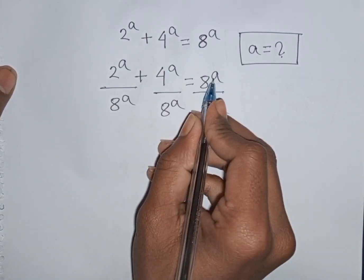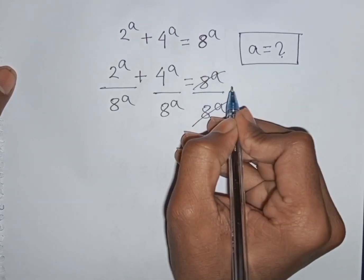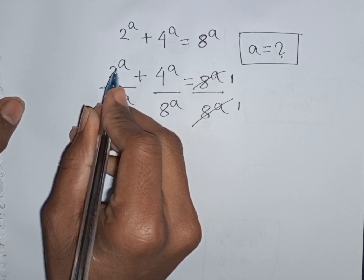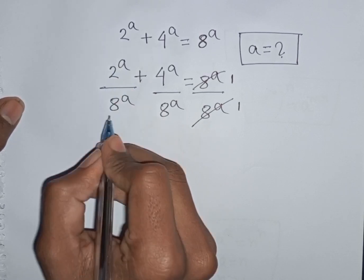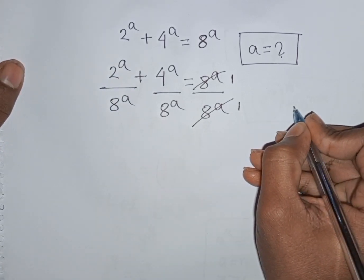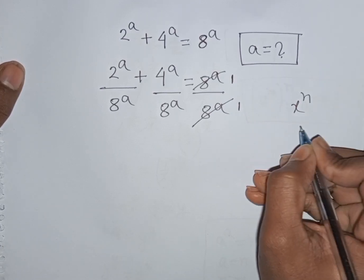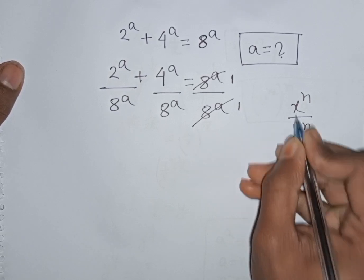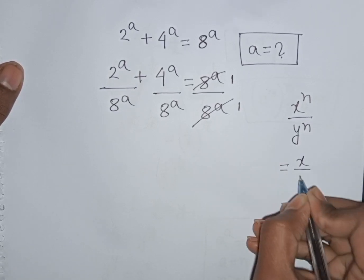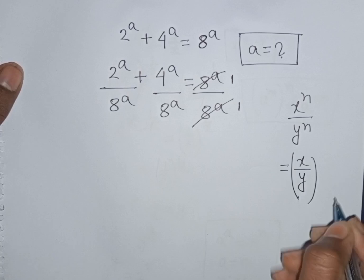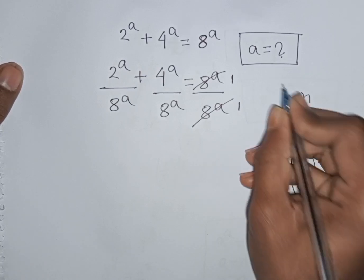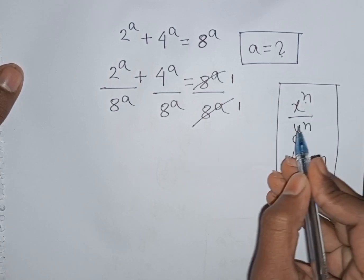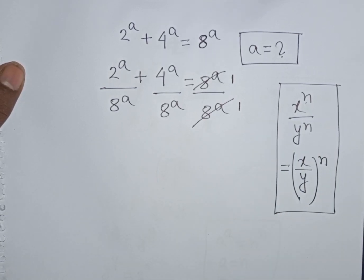We see this 8^a and this 8^a will be cancelled. Now from here we see the same power but different base. So remember this exponential rule: x^n times y^n is equal to (x times y)^n — same power but different base.